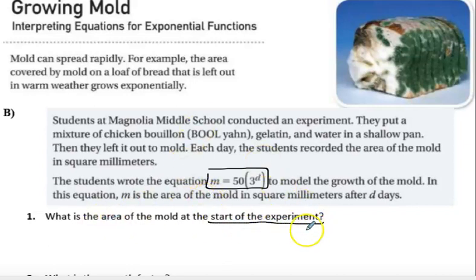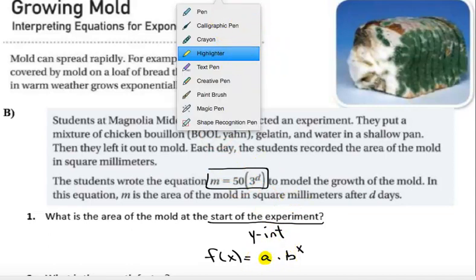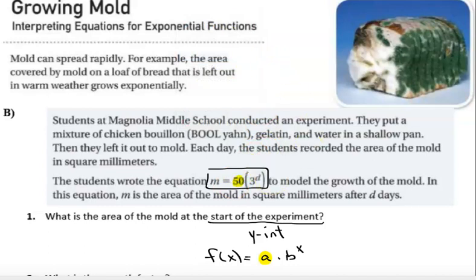What I'm looking for here is another way for looking for the y-intercept. And the y-intercept of our equation f of x equals A times B to the x power, I'm looking for that A there. So what is the y-intercept, or what's my A value? If we look at that equation that they wrote there, they wrote M equals 50 times, so that 50 is equal to the start of the experiment. So that happens to be 50 square millimeters at the start.